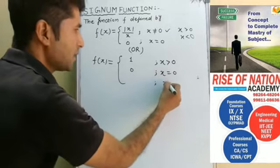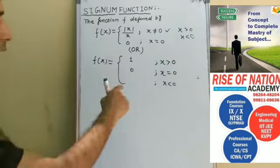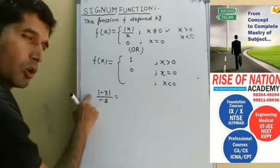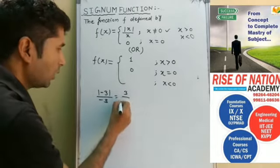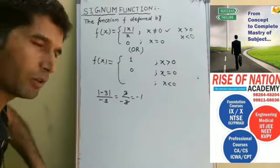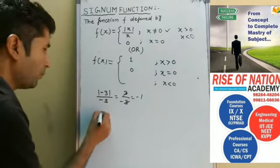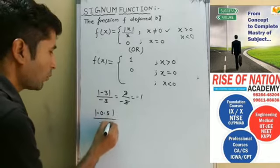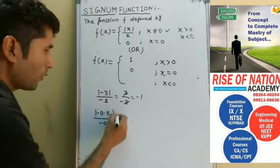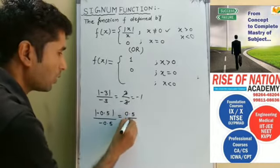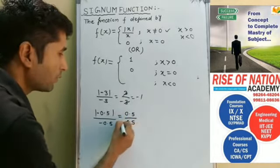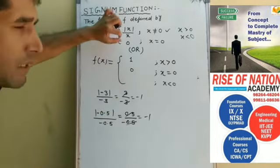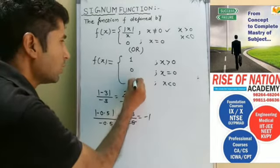Now we take the value of x less than 0, that means a negative value. If we take a negative value, for example minus 3, then |−3| / (−3). The modulus of minus 3 is always positive, so we get 3 / (−3) = −1. So if we take the value of x as negative, we always get the output as minus 1.